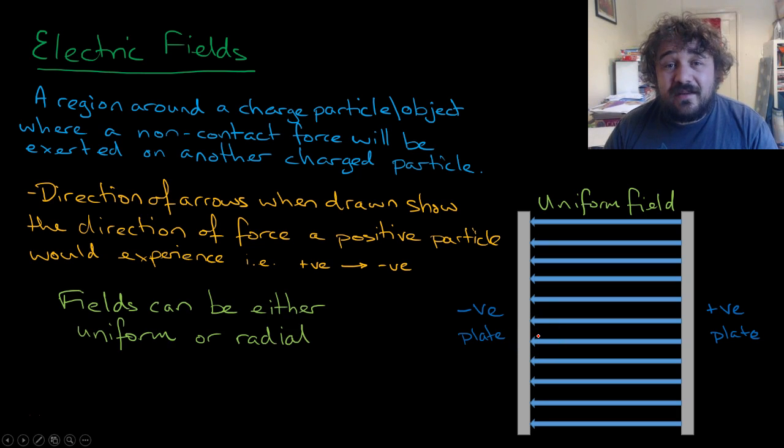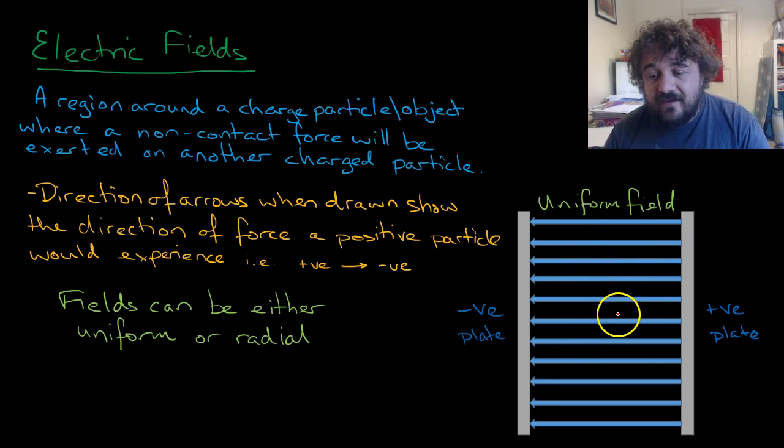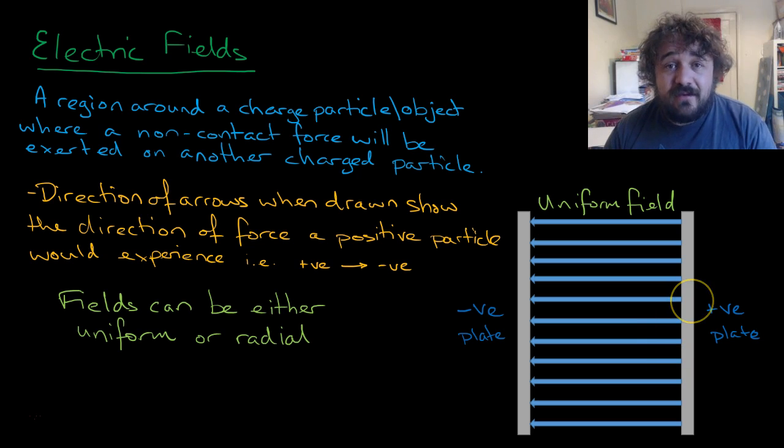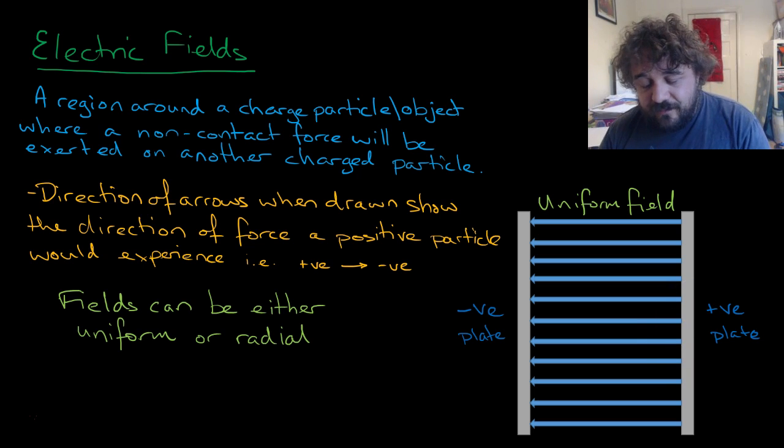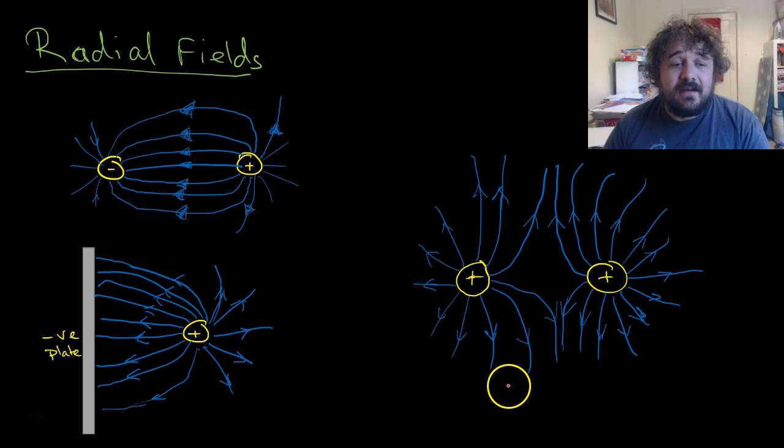Fields can either be uniform or radial. This is a uniform field. See how all the field lines are in the same direction. It's between two straight plates that are separated apart from each other. They've got a charge that averages between the two. And you get a uniform field, all the lines going straight. They are parallel, and that is not an accident.